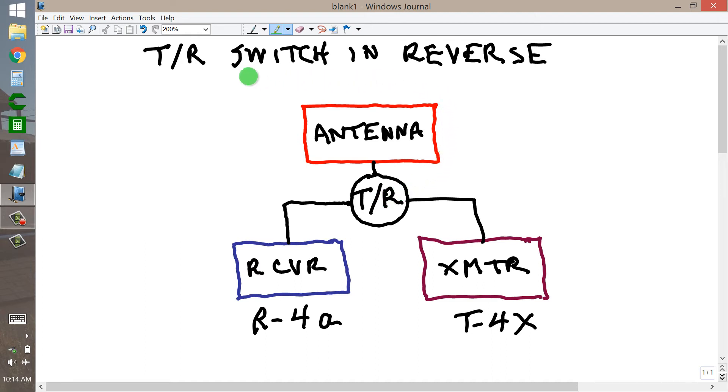But that is the conventional use of a TR switch. TR, of course, meaning transmit, receive. It allows a single antenna to be used with a separate receiver and transmitter on CW or a single sideband, but generally CW, so that you can have full break-in operation.